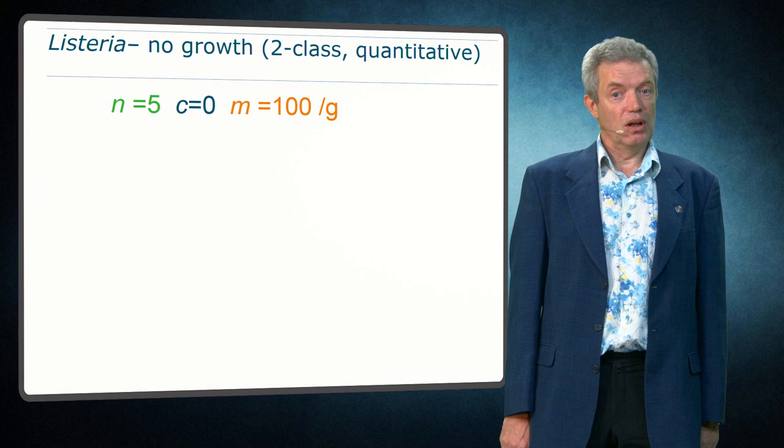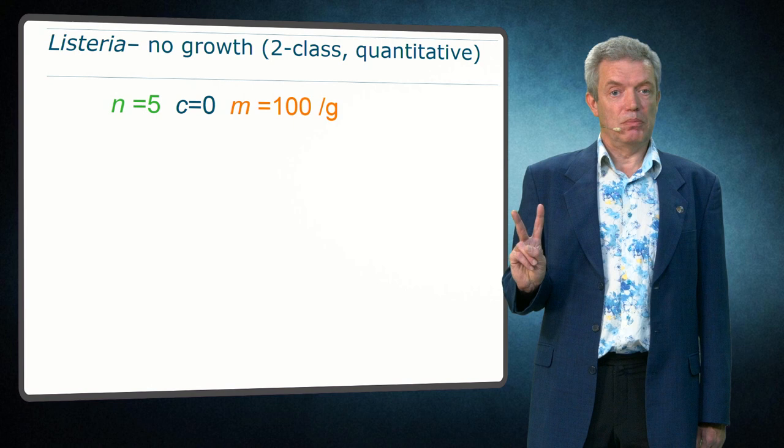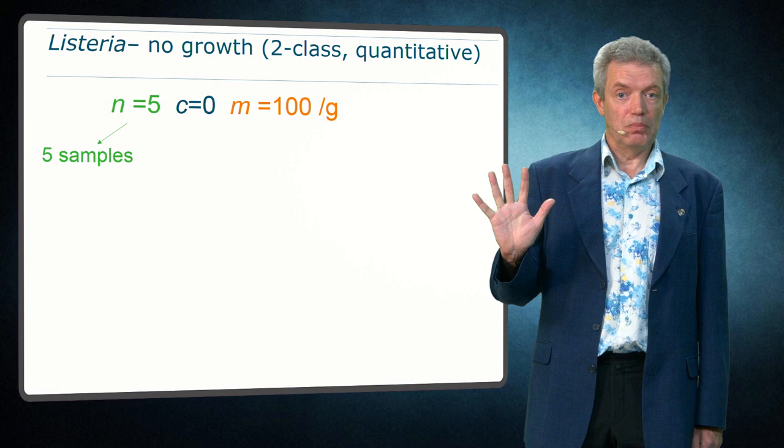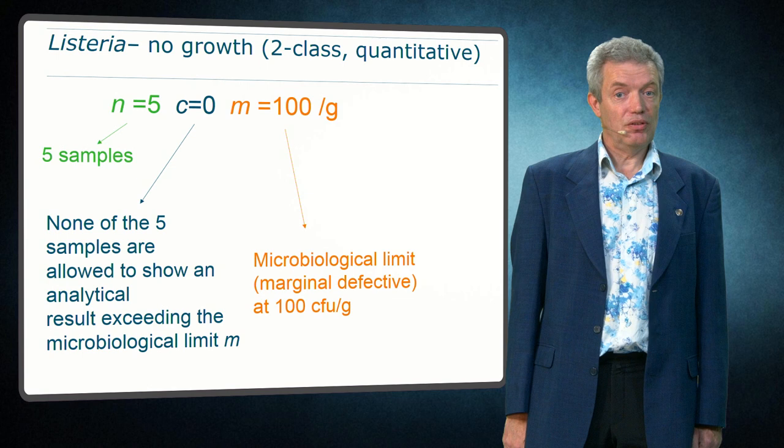The last type of sampling plan described here is one that is not in the Powdered Infant Formula criteria, and that is a quantitative two-class sampling plan. That can be, for example, a plan for Listeria monocytogenes, as in the European legislation for products not supporting growth of Listeria. The number of samples equals five, none of the samples can be positive, and the microbiological limit is quantitative and equals 100 colony-forming units per gram.